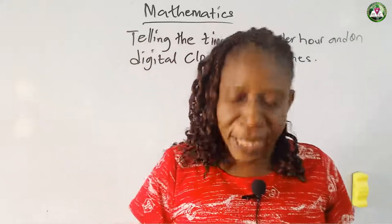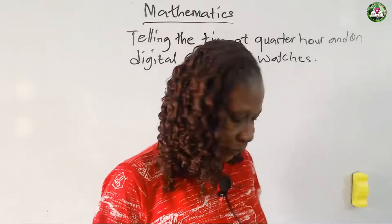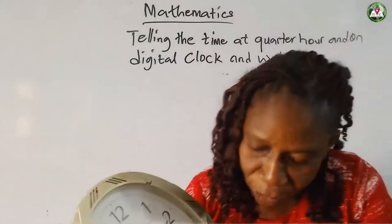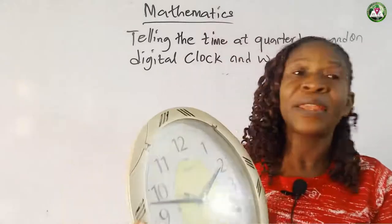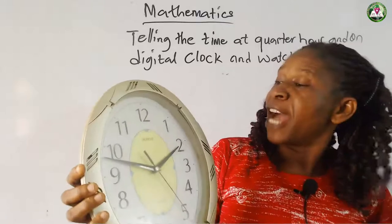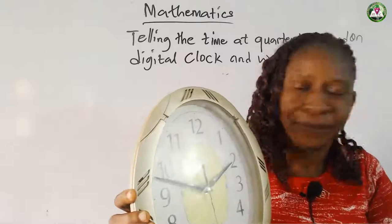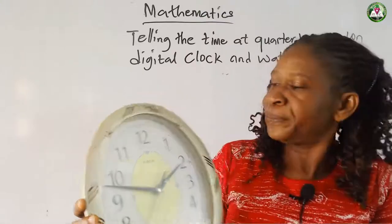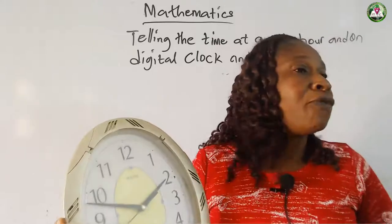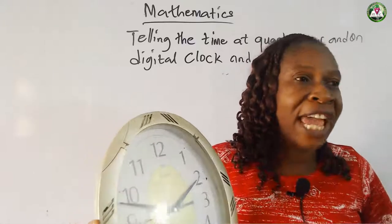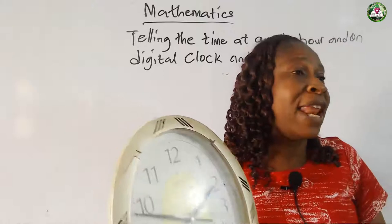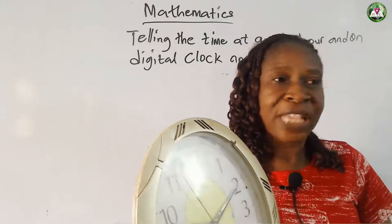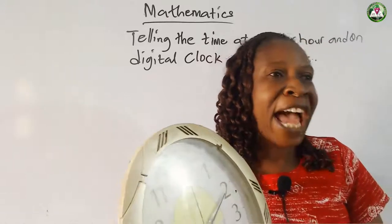For you to read the time hourly, we use the long hand. We use a clock to read time. Looking at this clock, you can see that this particular clock has three hands — the long hand, the short hand, and the minute hand. From our last lesson, we discovered that the short hand is an hour hand. I said the short hand is an hour hand. That means we use the short hand to read the time hourly.